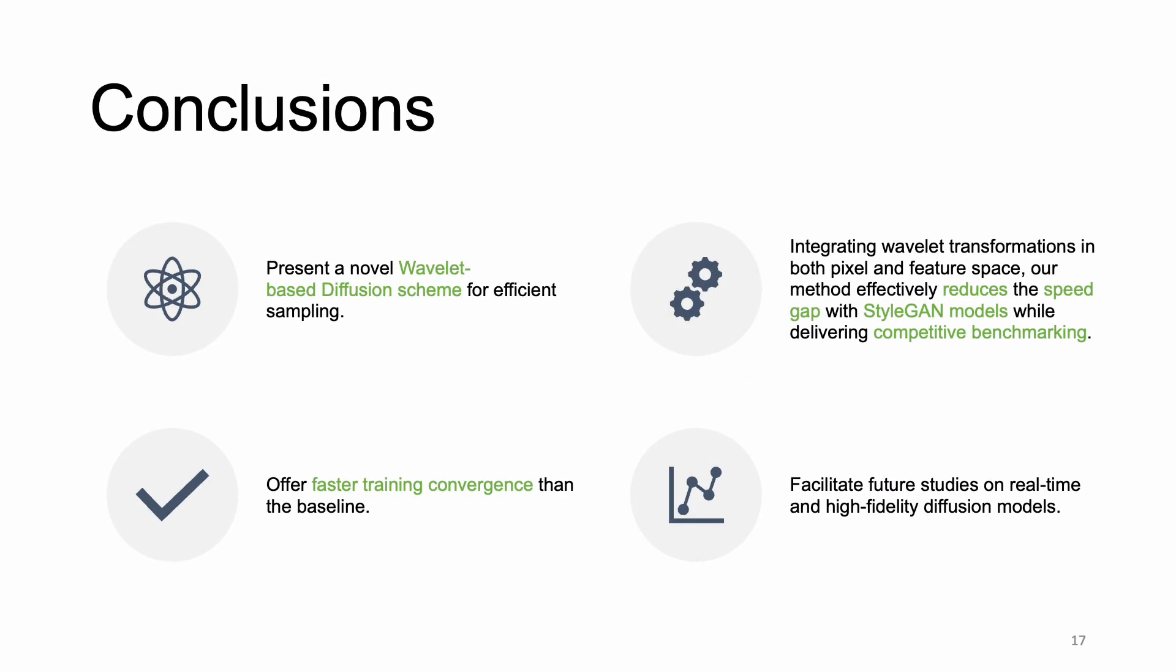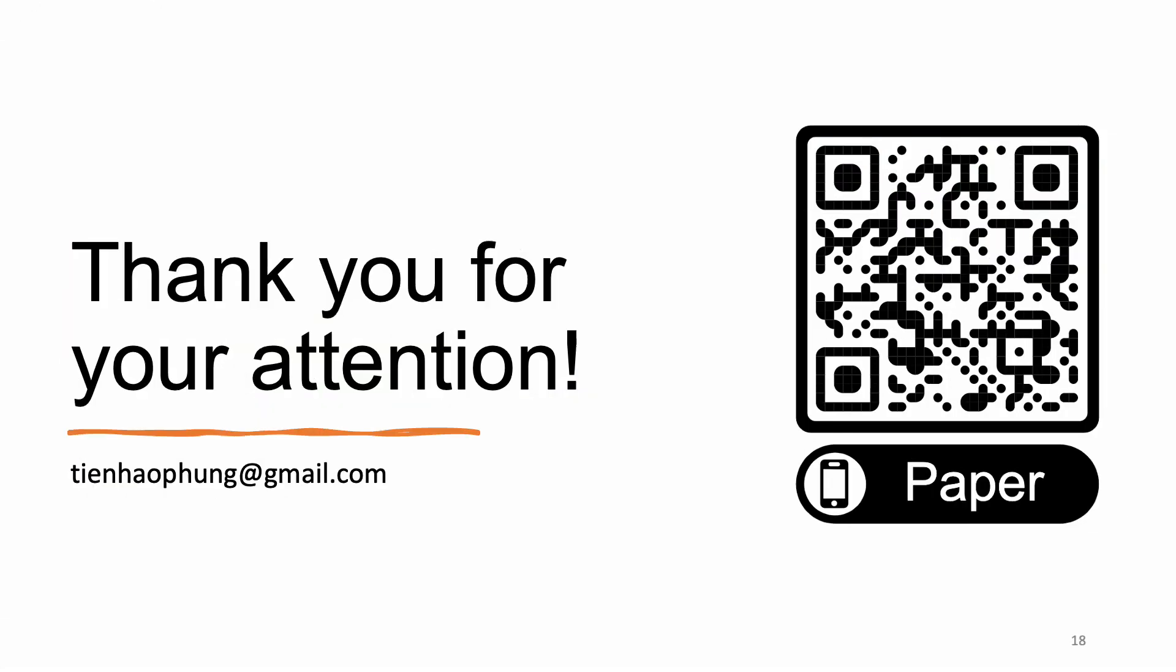In a nutshell, we present a novel wavelet-based diffusion scheme for efficient sampling. By using wavelet transformation, our method effectively reduces the speed gap with StyleGAN models while delivering competitive benchmarking. Compared to DDGAN, our method also offers faster training convergence. It can serve as a stepping stone to facilitate future studies on real-time and high-fidelity diffusion models. Thank you. You can scan the QR code for more details or contact me via the provided email for further discussion.